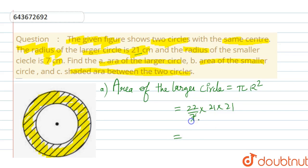So we can simplify: 7 1s are 7, 7 3s are 21. So 22 into 63, this will be equals to 1386 cm square is the area of the larger circle.